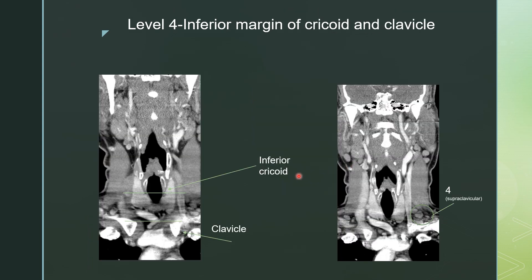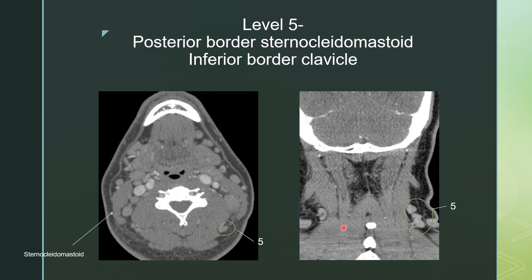Level 4 lymph nodes are just below that — below the cricoid and above the clavicle. The inferior border of the cricoid, the superior border of the clavicle, and around the carotid sheath define this region. These are level 4, or supraclavicular, lymph nodes.